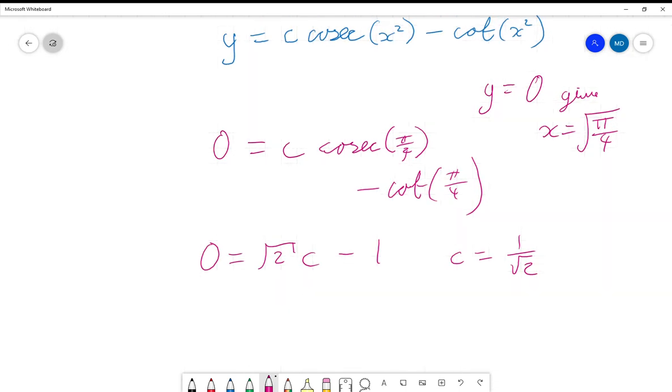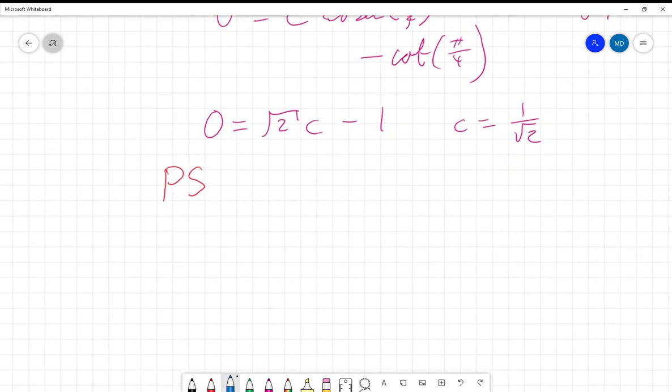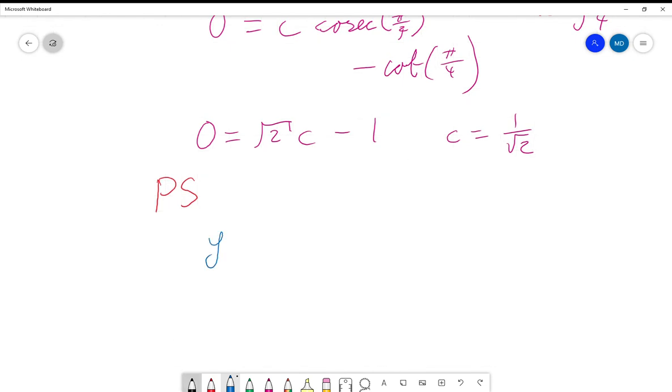equation is going to be y = (1/√2)·cosec(x²) - cot(x²).